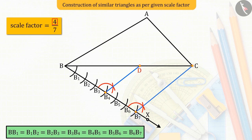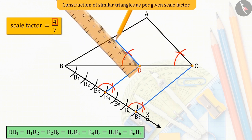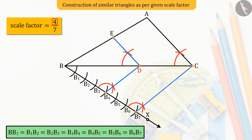Again, from the point D, we draw a line parallel to side AC, such that it intersects the side AB at point E. This gives us the required triangle EBD, whose sides are in the ratio 4 upon 7 of the corresponding sides of the given triangle ABC.